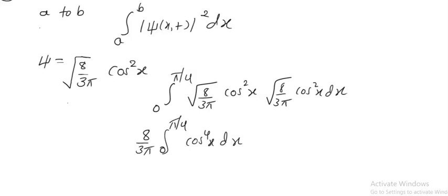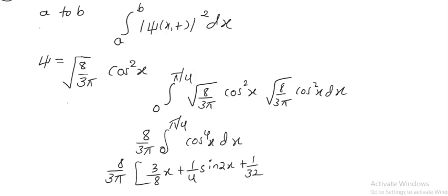This integration is similar to the previous one, so I will skip that part. The result is: (8 by 3 pi) into [3 by 8 x plus (1 by 4) sin 2x plus (1 by 32) sin 4x], which is the integration of cos squared x dx. We apply the limit 0 to pi by 4. For sin 4x, sin(4 into pi by 4) equals sin pi, which is 0.